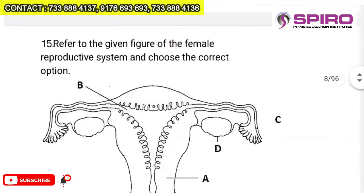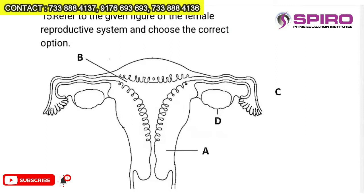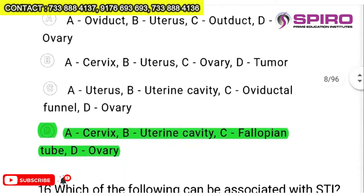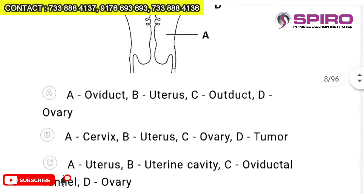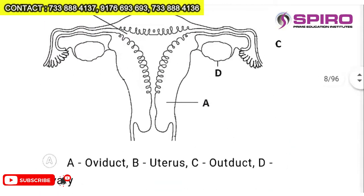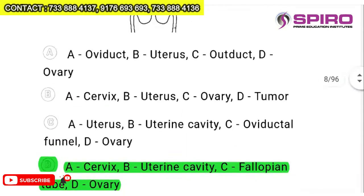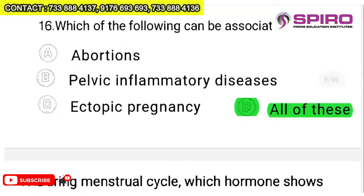Question 15: straight from the NCERT book — a diagram of the female reproductive system. D is ovary, the uterus is visible, then fallopian tube, and cervical region. Looking at option D: A is cervix, B is uterine cavity, C is fallopian tube, D is ovary. No mistake about it — straight away you can answer and feel happy getting such questions.